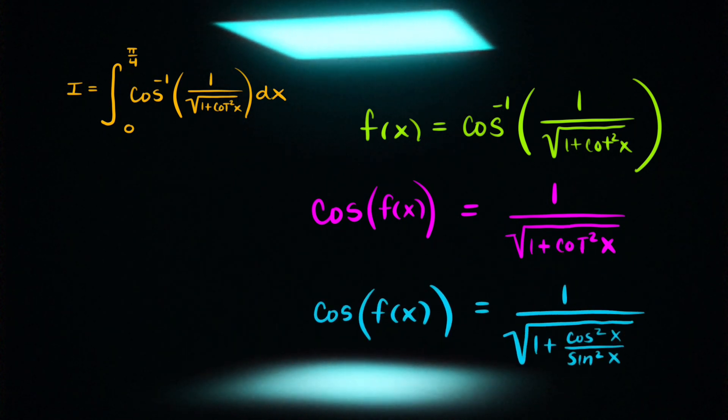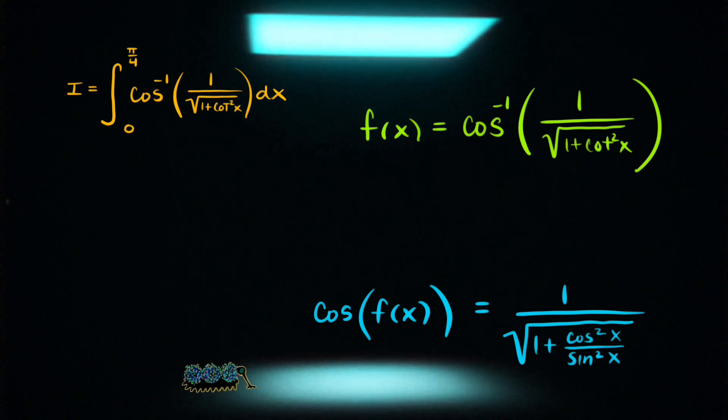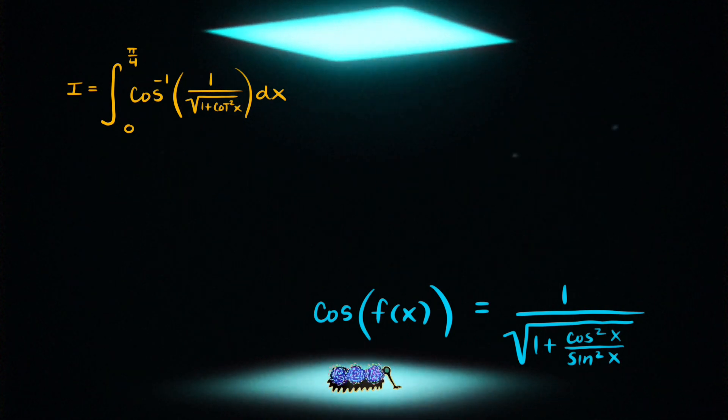Now we're going to take a look at that cotangent squared and rewrite it using an identity. We'll rewrite this as cosine squared over sine squared. And in order to combine that 1 plus cosine squared over sine squared, we would really like to write that 1 as sine squared over sine squared.